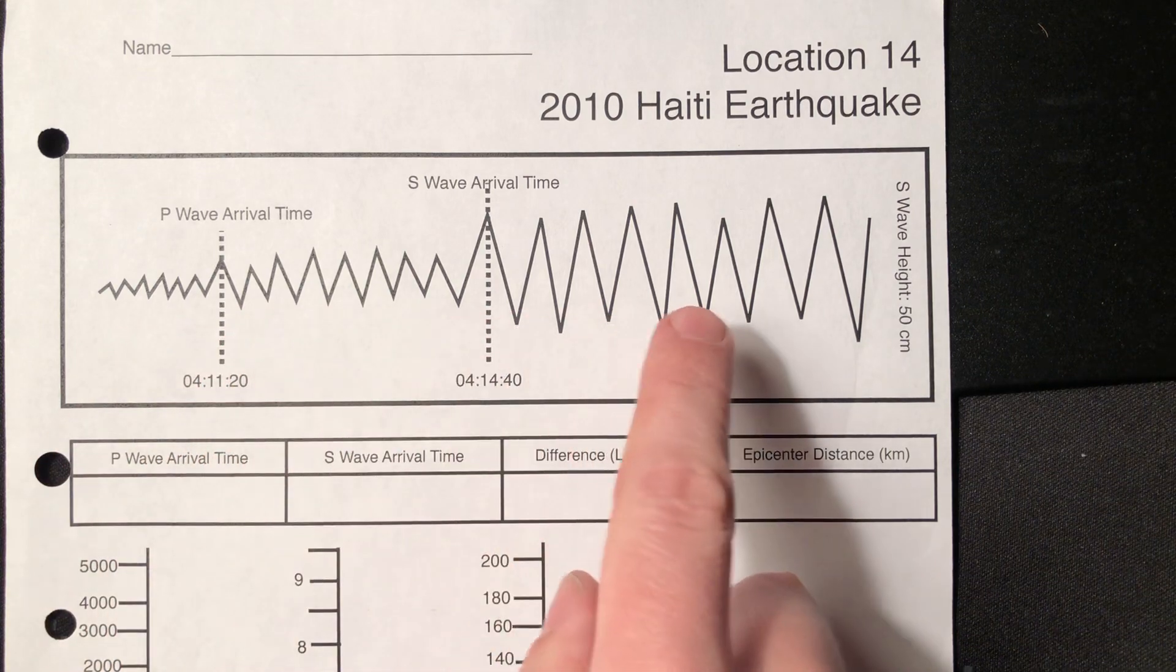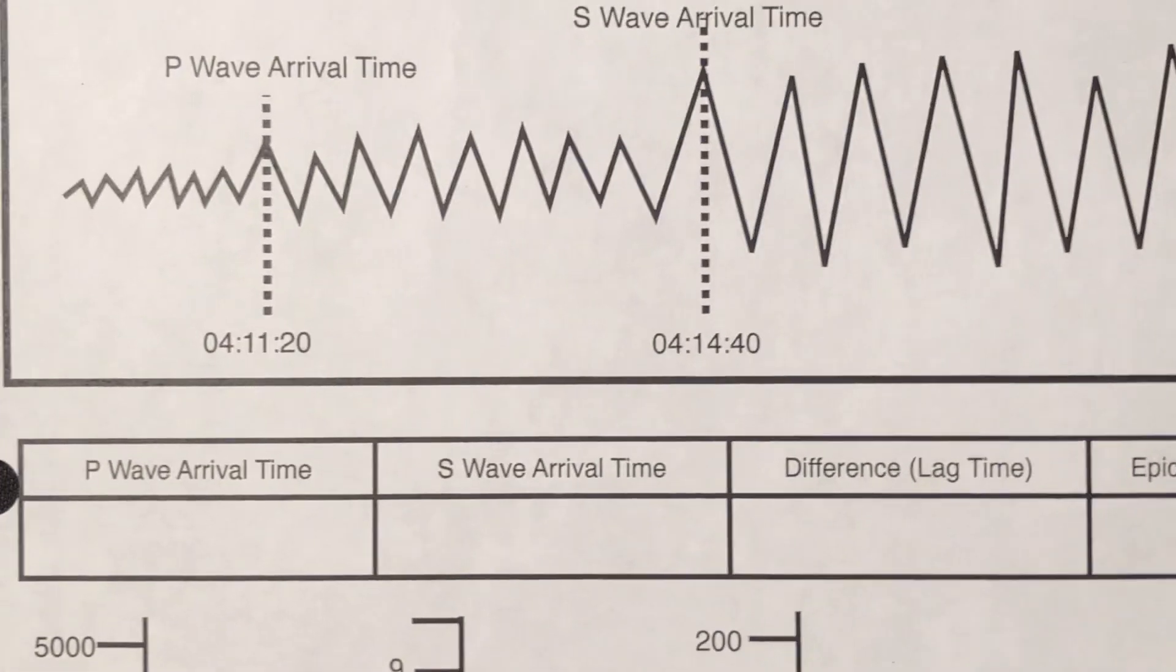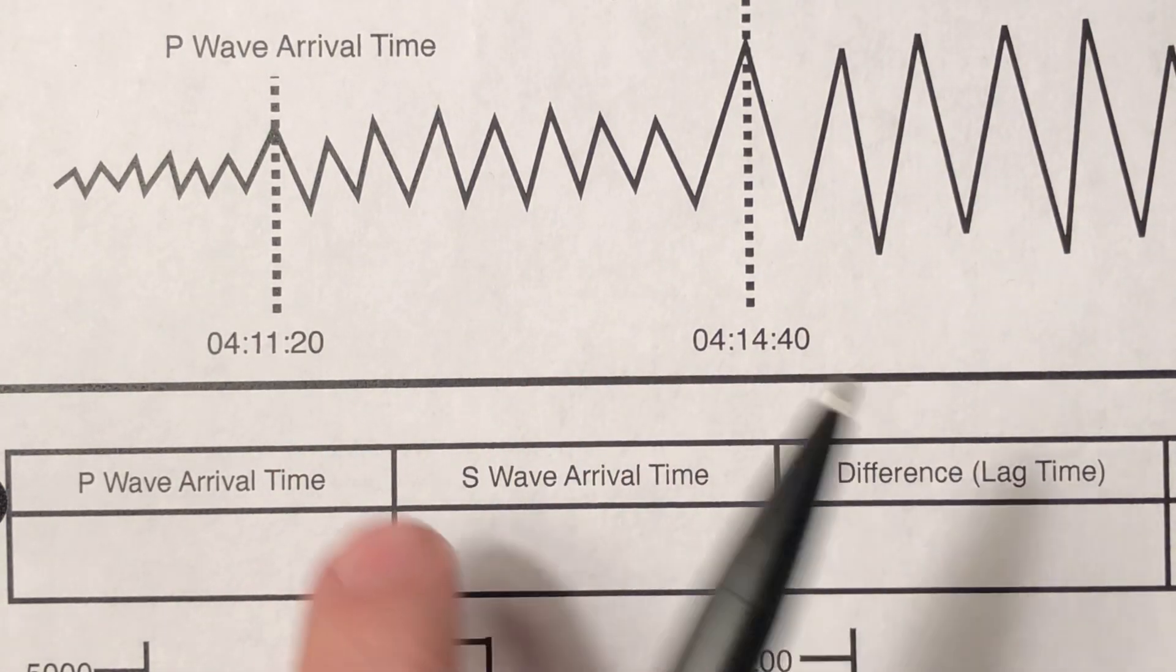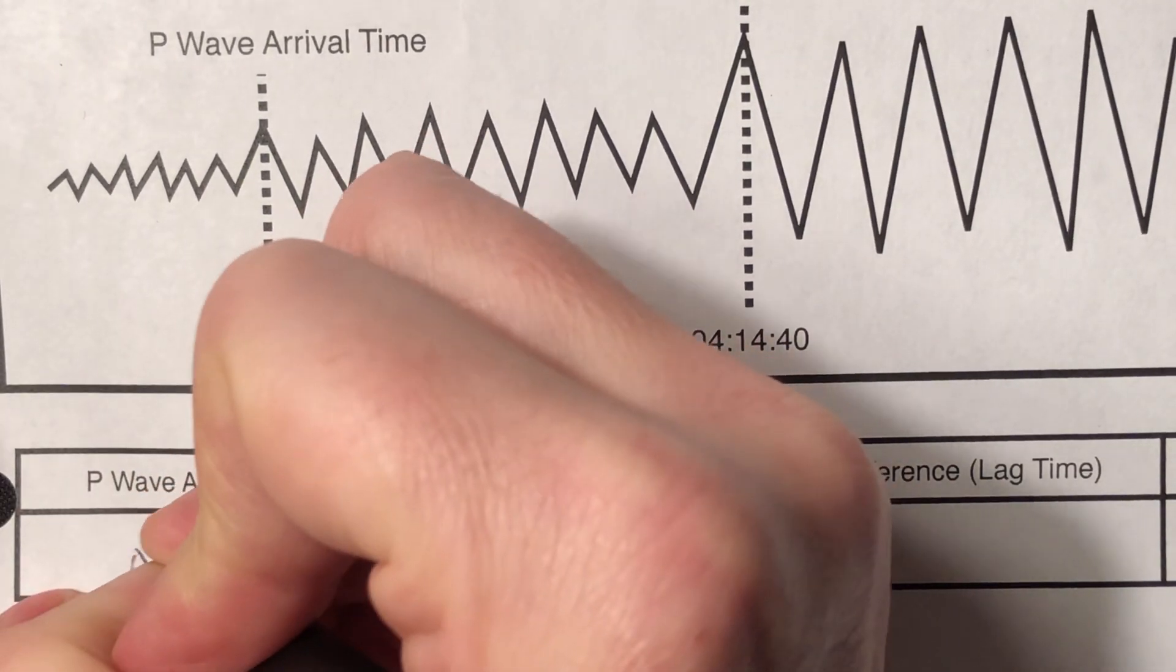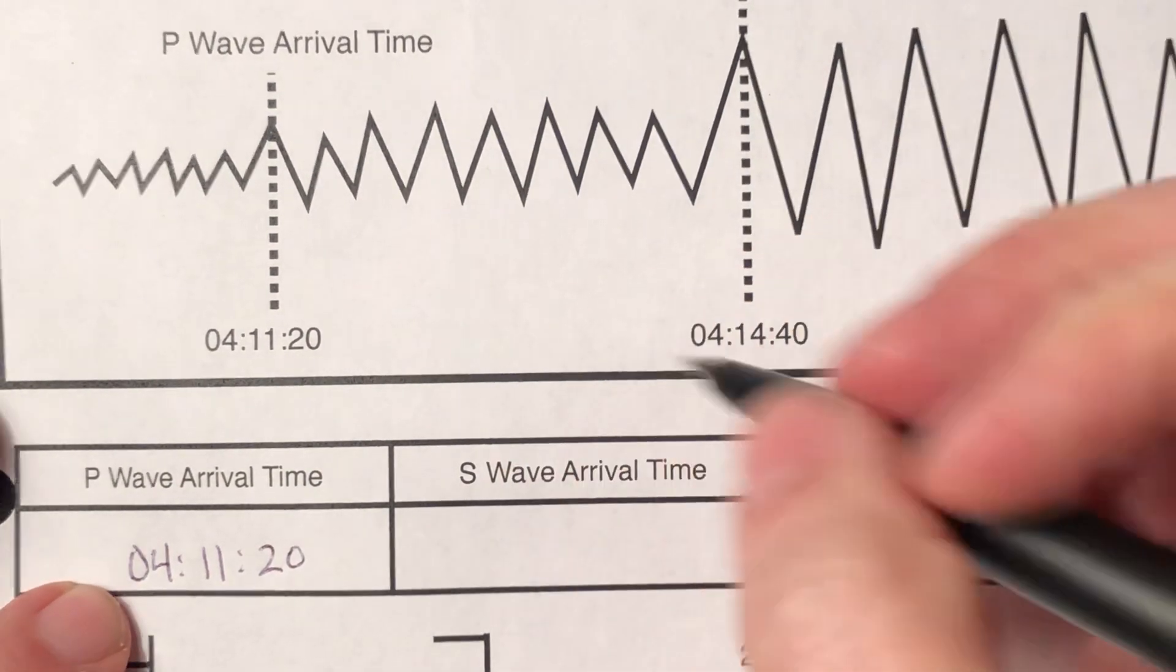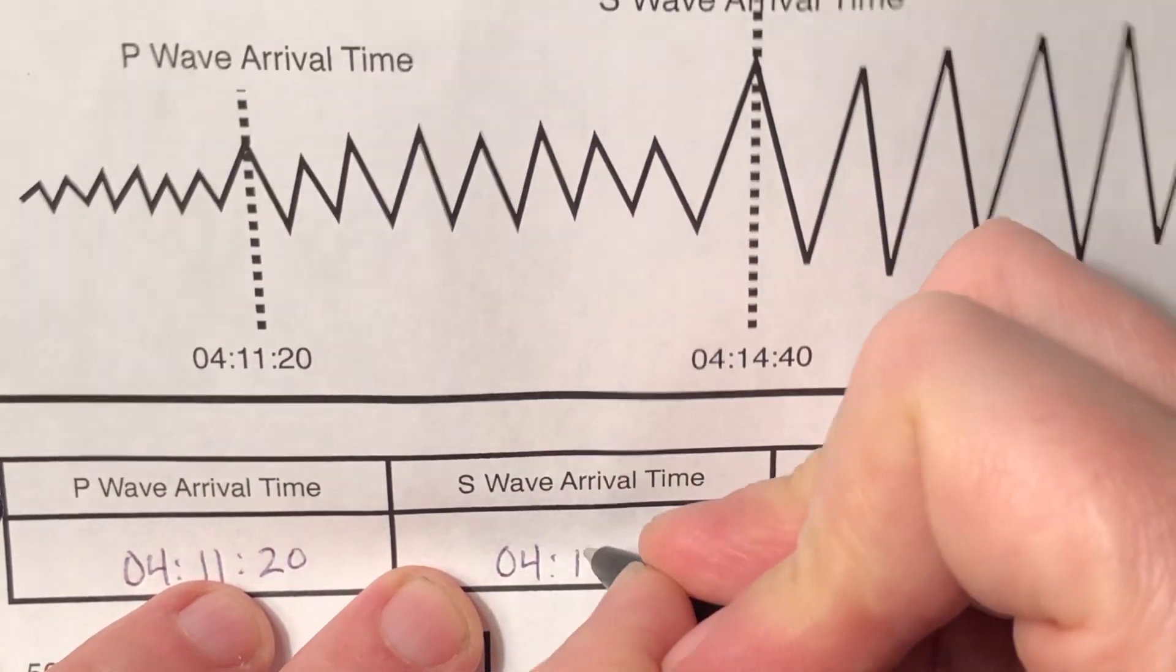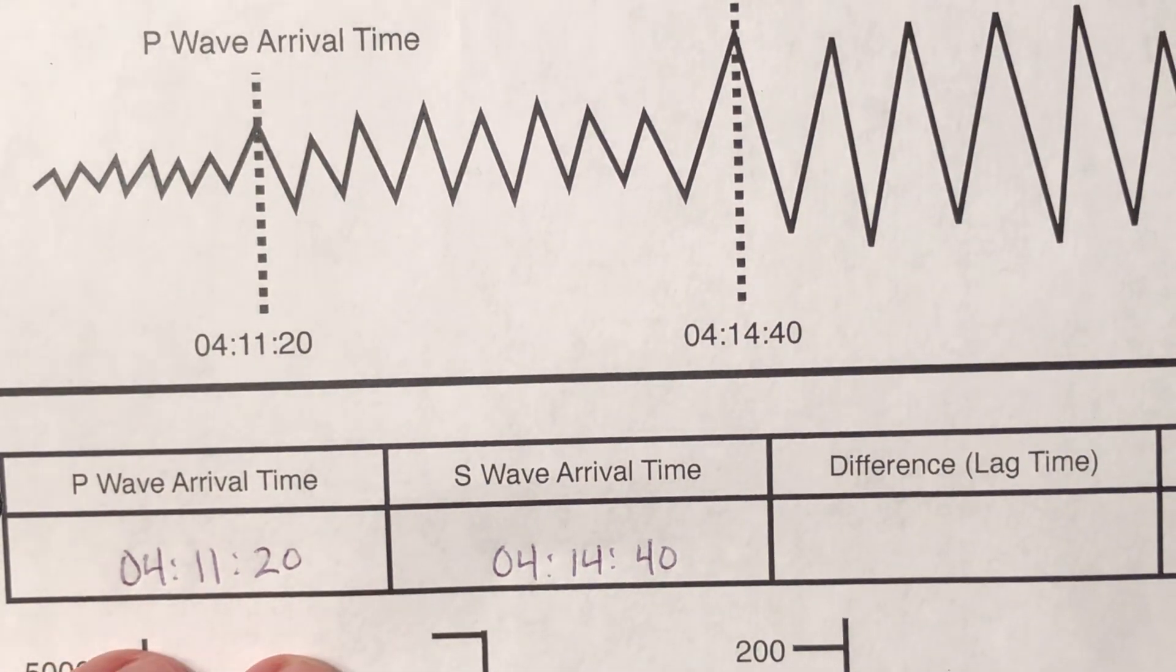So what I've done up top is I've given a seismogram, and basically what we want to do is we want to record the P-wave arrival and the S-wave arrival. Now there's no AM or PM here, so it's not a big deal. So your P-wave arrival is 4, 11, 20. The S-wave arrival, which is given to you, is going to be 4, 14, 40. So those arrival times are no problem.